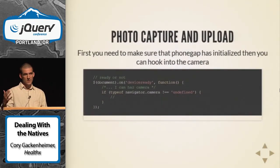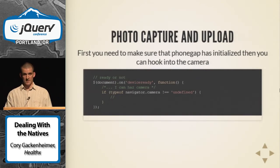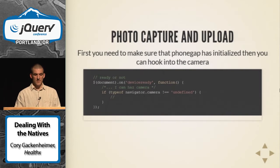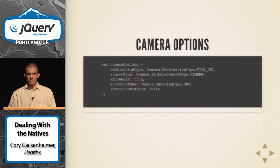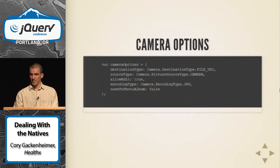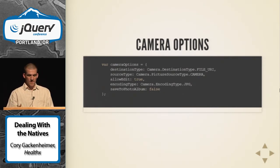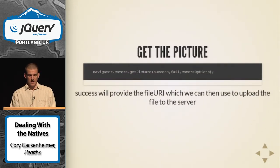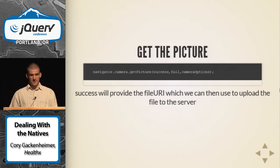Let's say you want to use the camera and upload an image to a server. First you listen for the deviceready event, check that you have camera access, then set options — destination as a file URI, JPEG encoding, pulling from the camera only. Pass those into the getPicture function, which gives you a success callback containing the file URI of the image you just took.